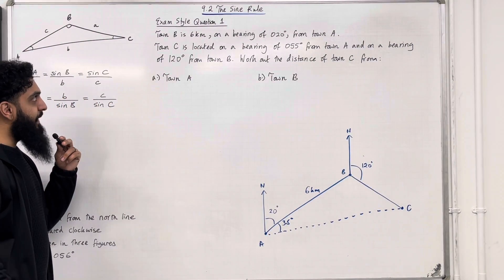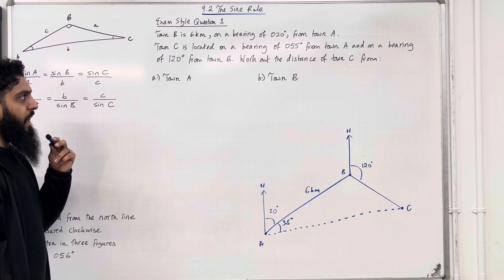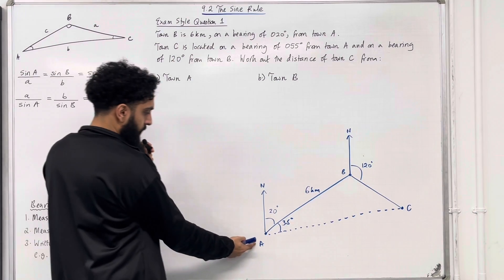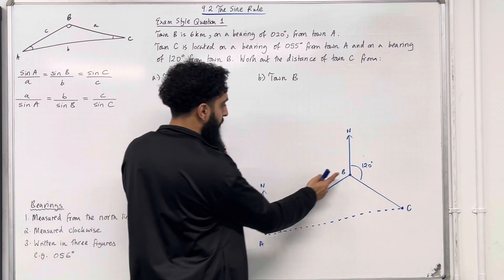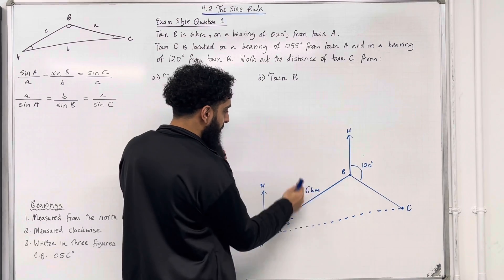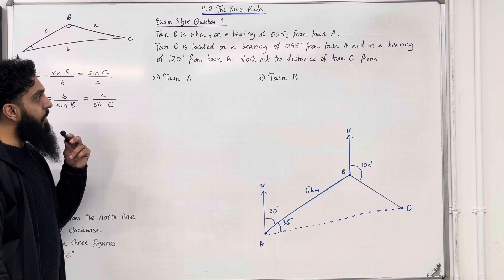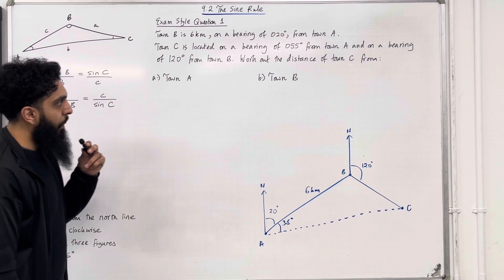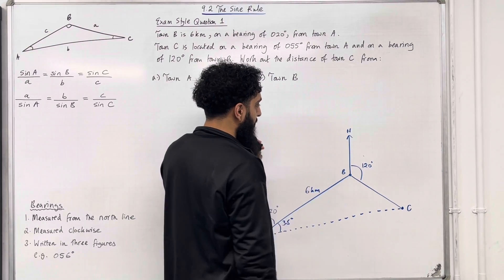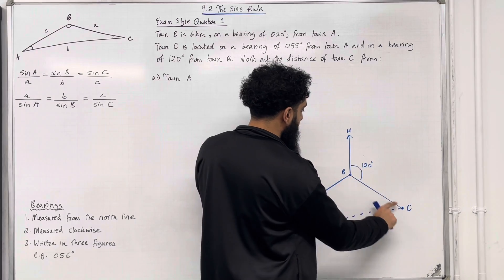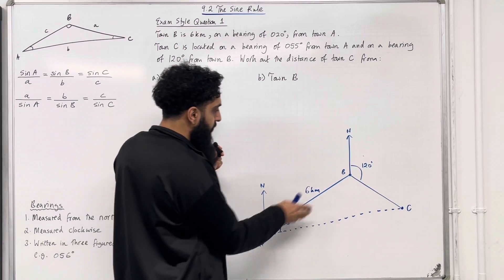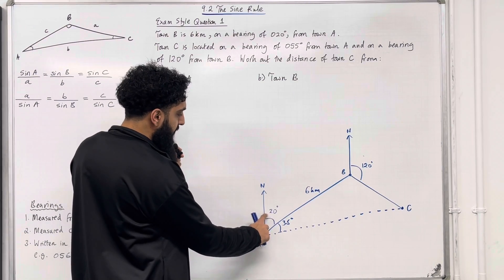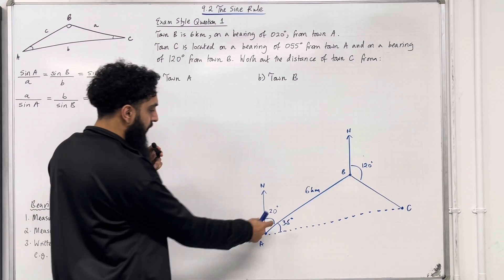Going back to the question: town B is 6 kilometres on a bearing of 20 degrees from town A. So from town A we draw a north line and measure an angle of 20 degrees going clockwise to town B, with the distance from A to B being 6 kilometres. Town C is located on a bearing of 55 degrees from town A and on a bearing of 120 degrees from town B. From town B we draw a north line and measure 120 degrees clockwise to town C. From town A we draw a north line and measure 55 degrees clockwise to town C. Since this part is 20 degrees, this gap is 55 take away 20, which is 35 degrees.